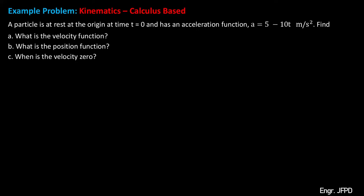Find: a) what is the velocity function, b) what is the position function, and c) when is the velocity 0. From the given, a particle is at rest at time t equals 0. That means the initial velocity is equal to 0, and the initial position xi is equal to 0 since the particle is at the origin initially.